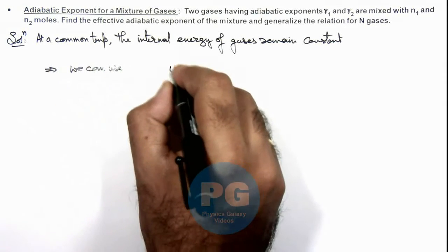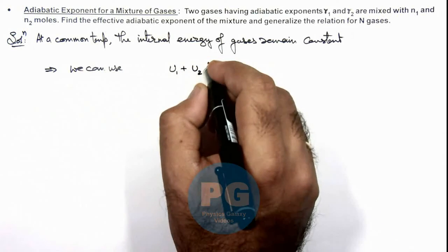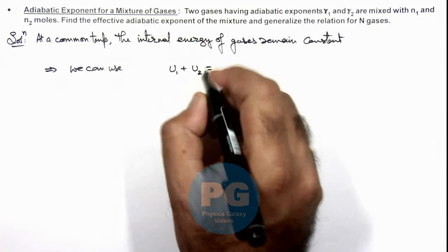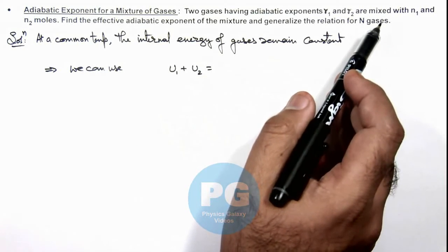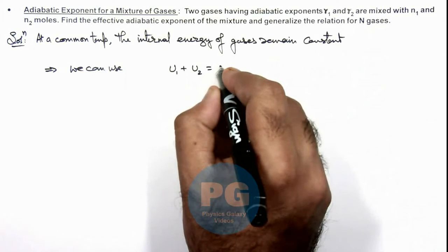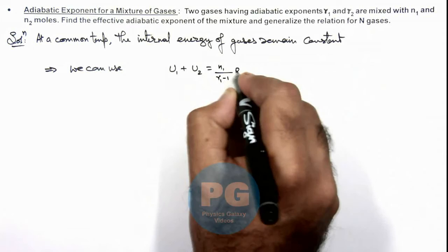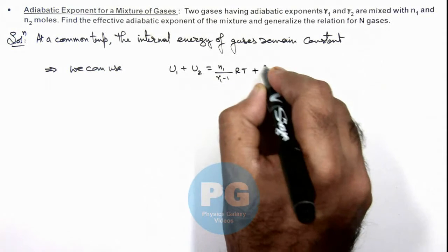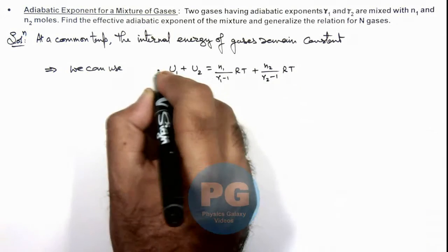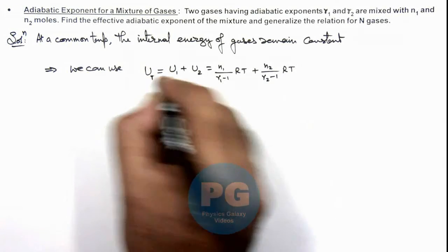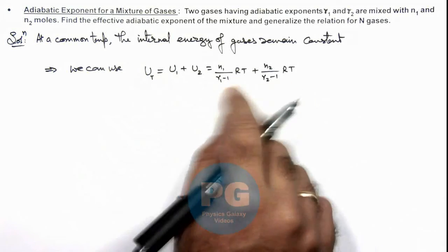This implies we can use internal energy of first gas plus internal energy of second gas. For the first gas it is n1 times Cv times T, which can be written as n1 by (gamma 1 minus 1) times R T, plus n2 by (gamma 2 minus 1) times R T. This is the total internal energy of the gas when the gases are at temperature T.